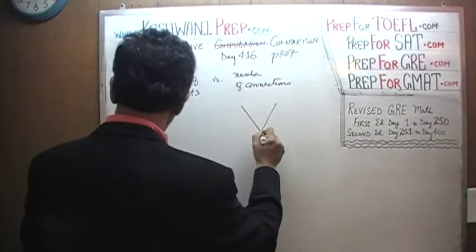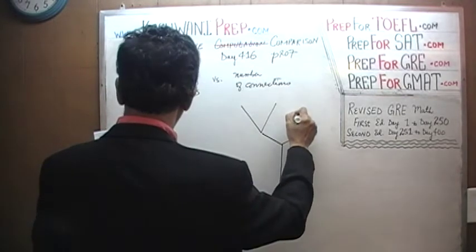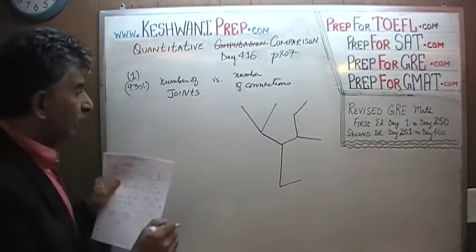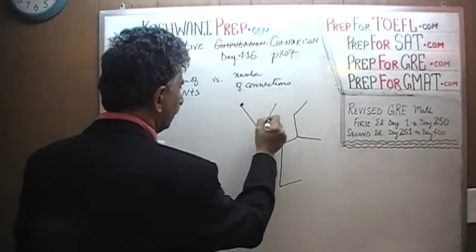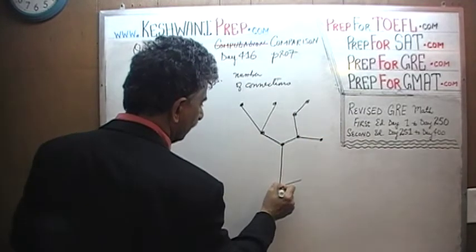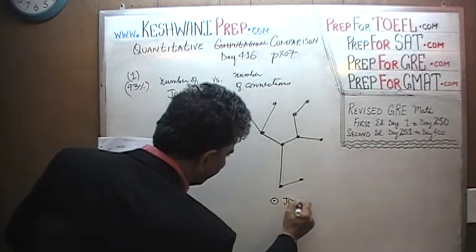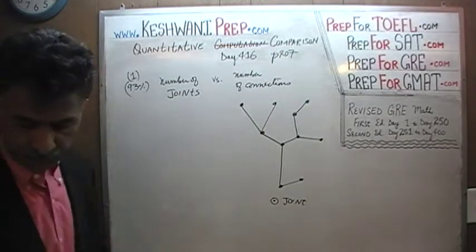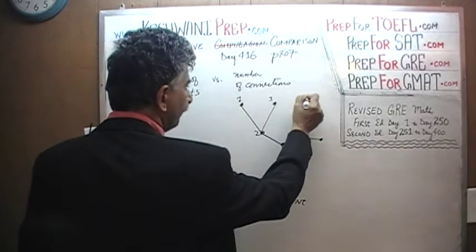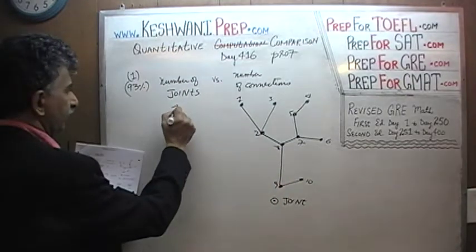The figure has two points here, then it goes like that, then here, then there, and finally up here. They are telling us that these points — 1, 2, 3, 4, 5, 6, 7, 8, 9, and 10 — are what they are calling joints. We just counted them: there are 10 of them. So the number of joints is 10.